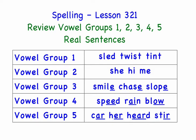Vowel group one is when you have one vowel in a word and the vowel is followed by a consonant. In that instance the vowel will represent its short sound. Vowel group two is when you have one vowel in a word but it's the last letter in the word. When that happens the vowel will represent its long sound.